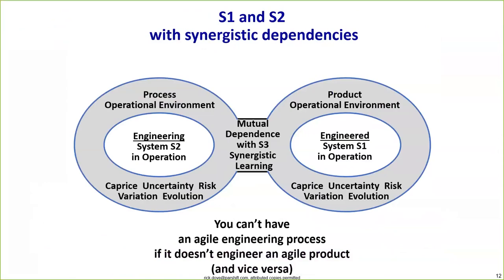On the left we have the system engineering process; on the right we have the system engineered product — they are intimately involved with each other. The statement is: you can't have an agile system engineering process if it does not build an agile system. The essence of an agile system engineering process is constant learning and application of that learning in real-time. The process not only produces the initial version of the system but continues its evolution.